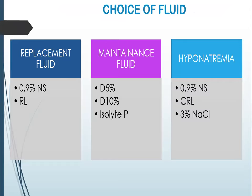The choice of fluid depends on the indication. For replacement of losses, we can use 0.9% NS and Ringer's lactate, as these have electrolytes and are isotonic to plasma. Commonly used maintenance fluids are dextrose 5% for extreme preterm or extremely low birth weight neonates, dextrose 10%, and Isolyte P. For hyponatremia, the available preparations are 0.9% NS, CRS, and 3% NS.